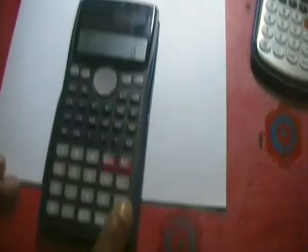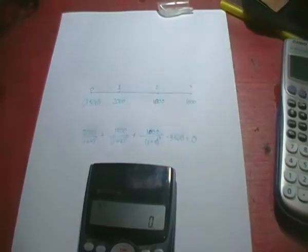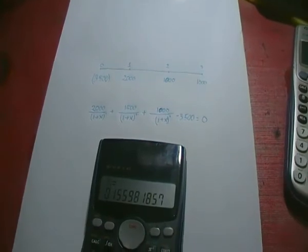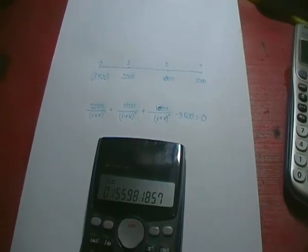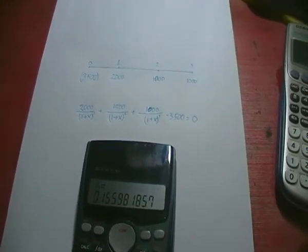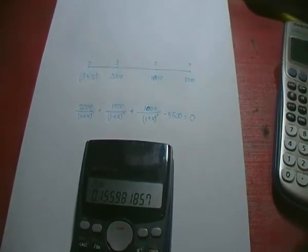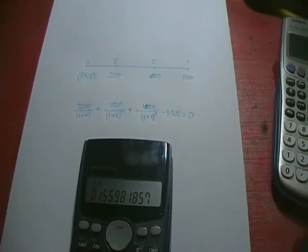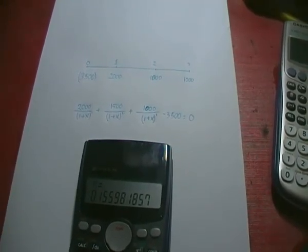Now again press shift plus solve. This is the result at which the left-hand side will be equal to the right-hand side, and this is our desired IRR at which the present value of all cash inflows will be equal to our initial investment.